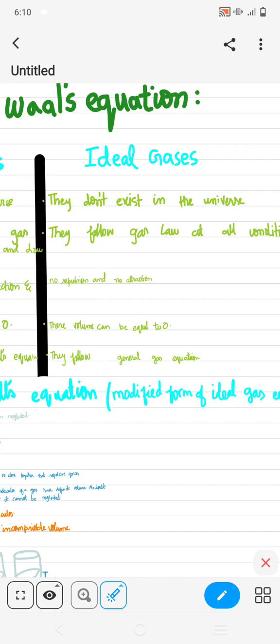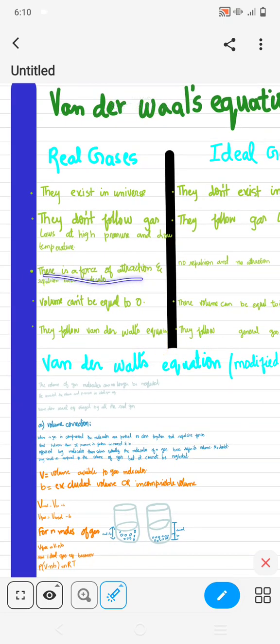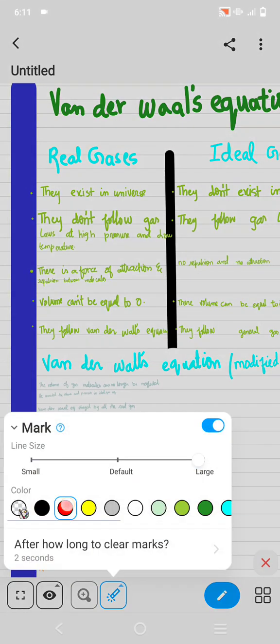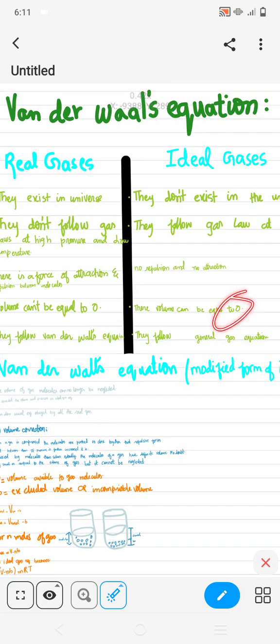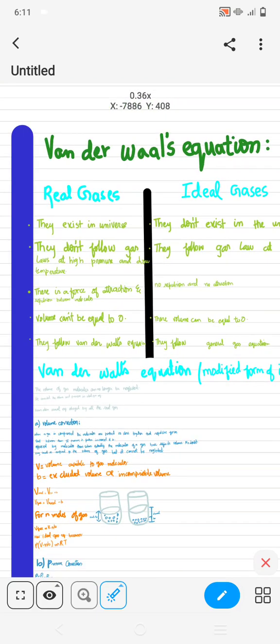Then we have there is force of attraction and repulsion between the molecules of the gases. Yes, in gases there is repulsion or attraction between molecules. But in the ideal gas there is no repulsion and no attraction. Then we have the volume cannot be equal to zero, but their volume can be equal to zero.